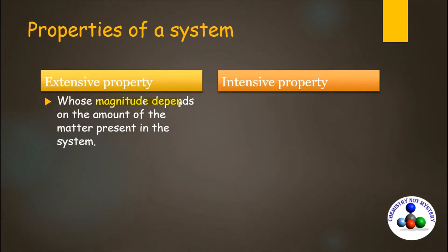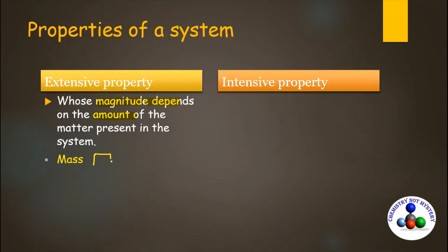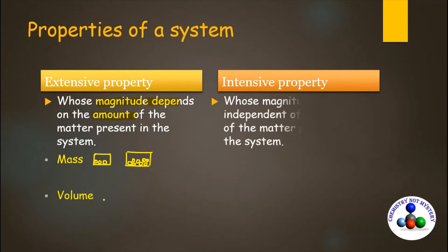Extensive properties are properties whose magnitude depends on the amount of matter present in the system. For example, mass — if the system has less amount of matter, then the mass will be less. In the same way, volume is an extensive property.